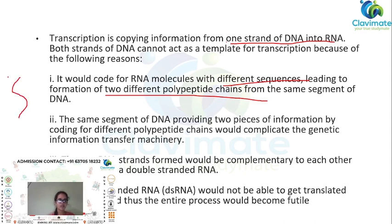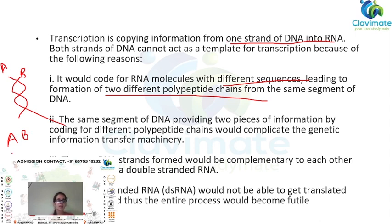Suppose strand A and strand B are the two strands of the DNA. If only strand A is used as a template for copying information into RNA, that would be valid. But if both strands are used as templates, you would have two polypeptide chains arising from strand A and strand B. Strand A would code one sequence and strand B would code a different sequence — both from the same DNA — resulting in confusion, producing two different RNA molecules from the same DNA.